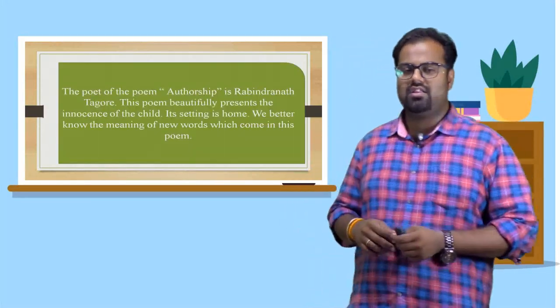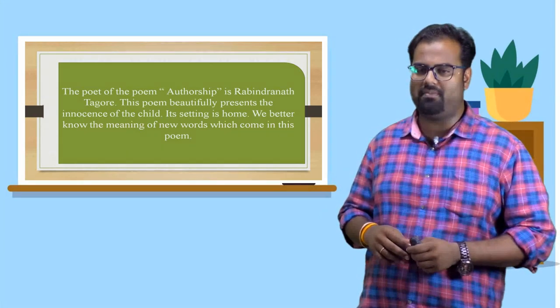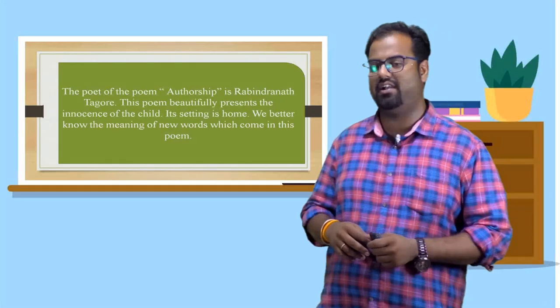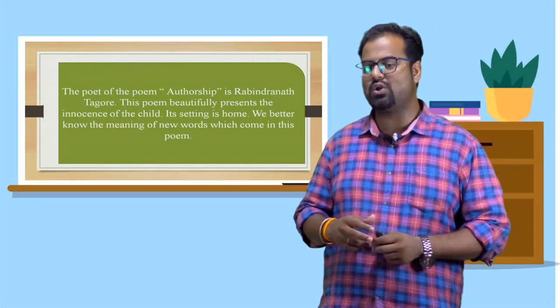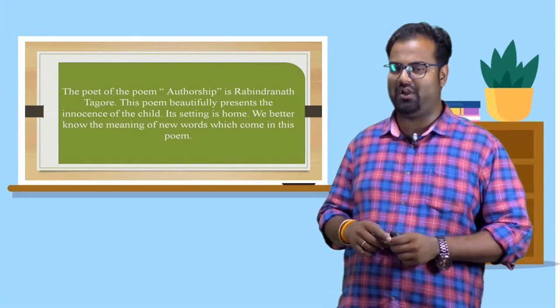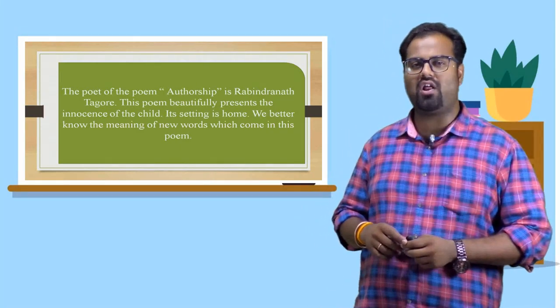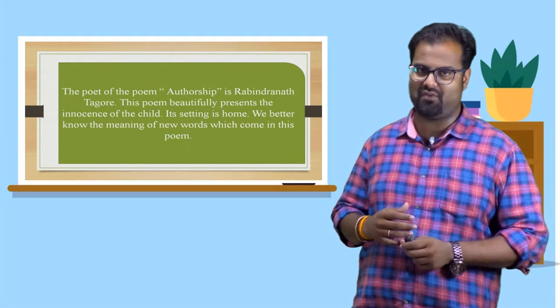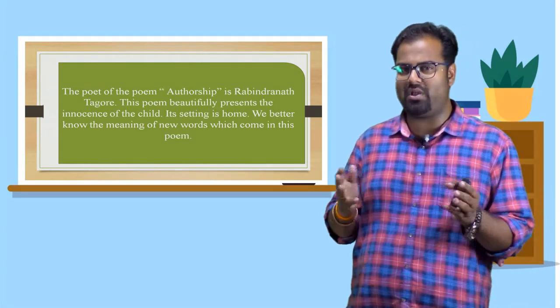Let's begin. The poet of the poem, authorship, is Rabindranath Tagore. This poem beautifully presents the innocence of child. It is setting his home. We better know the meaning of new words which come in this poem. Dear kids, as we all are aware, who has it in this poem? Rabindranath Tagore, of course. And what is the poem is about? We try to know the innocence mindset of a child.